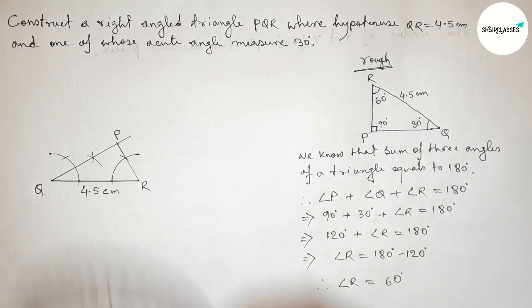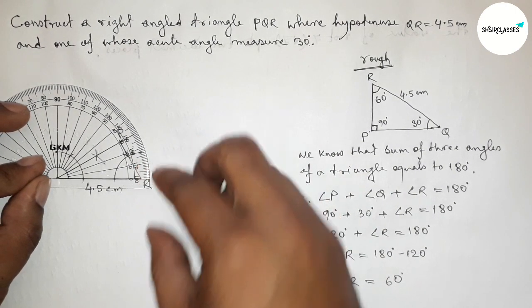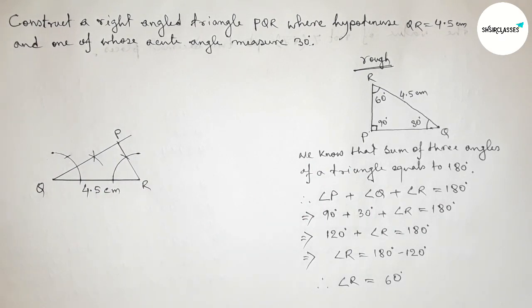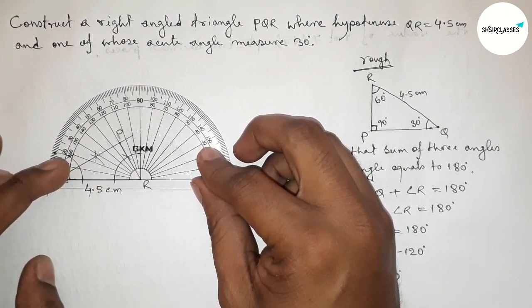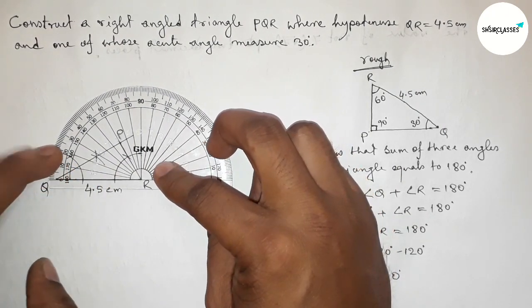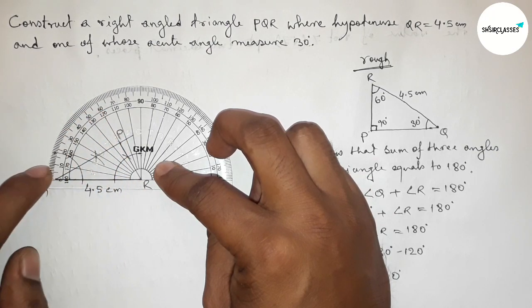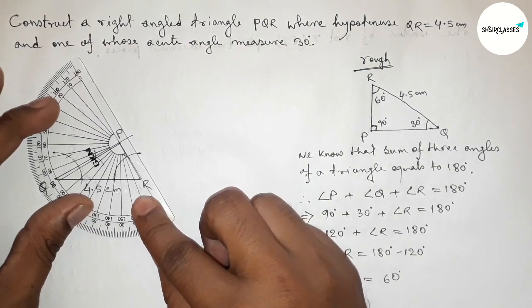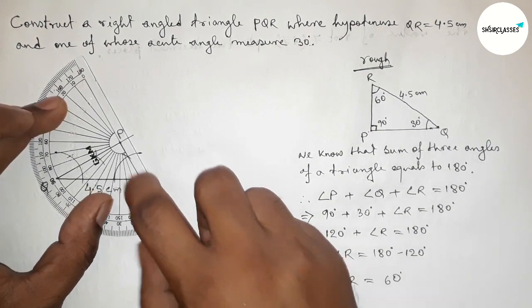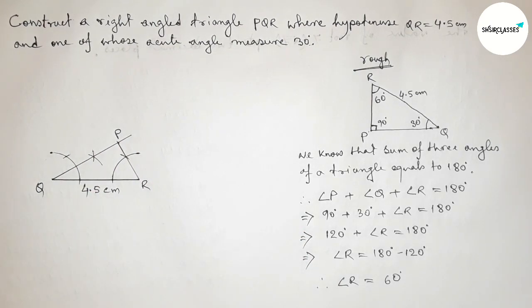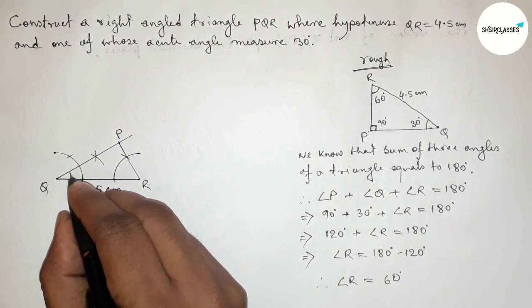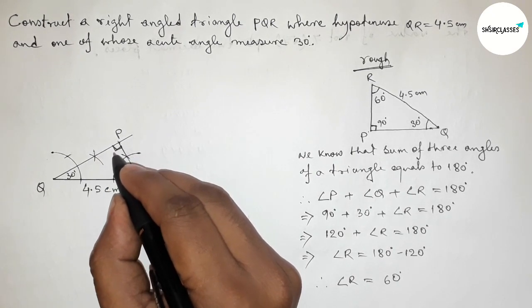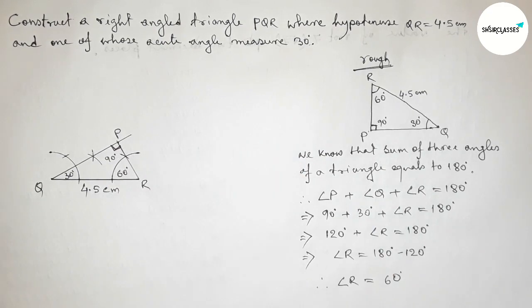Now checking all the angles using a protractor. Checking angle Q — this is perfectly a 30-degree angle. Checking angle P — this is perfectly a 90-degree angle. So angle Q = 30°, angle R = 60°, and angle P = 90°, confirmed with the 90-degree symbol.